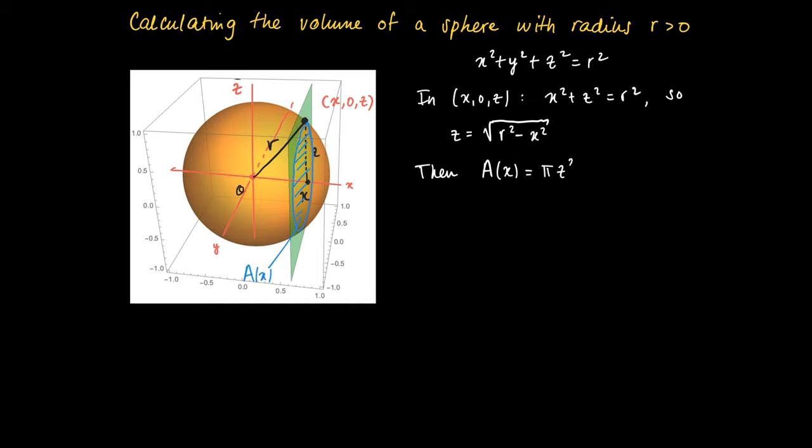And the area by the blue circle is no more than pi times its radius squared, but its radius squared is now the value z. So we get A(x) equals pi z squared, which equals pi times the square root of r squared minus x squared, and that one squared again. So we get pi times r squared minus x squared.